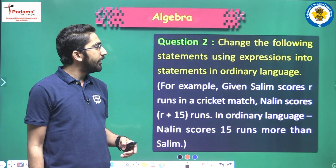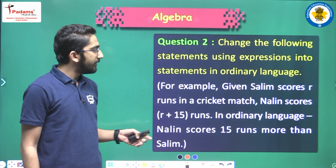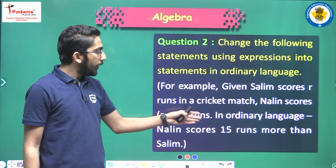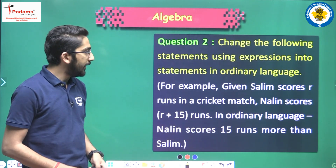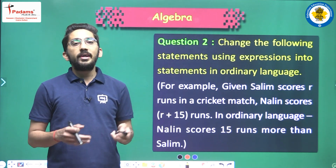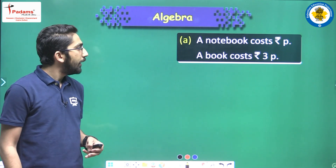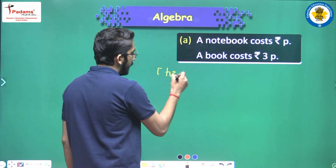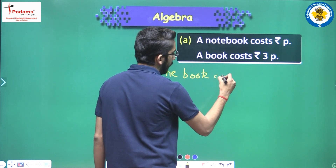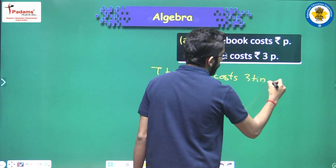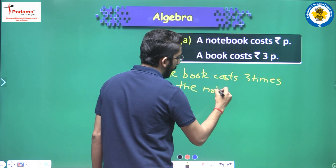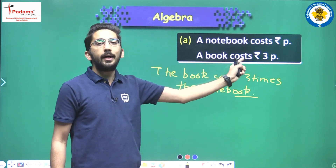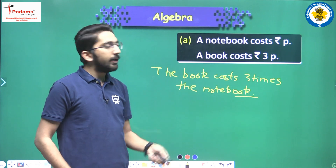Change the following statements using expressions into statements in ordinary language. For example: Salim scores r runs in a cricket match, Nalin scores r plus 15 runs — in ordinary language: Nalin scores 15 runs more than Salim. First: a notebook costs rupees p and a book costs rupees 3p. In ordinary language: the book costs 3 times the cost of the notebook.